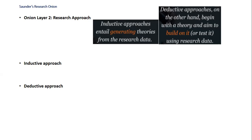Qualitative research is often used as a basis to formulate theories and identify patterns — it is great for exploratory research where the objective is to explore what people think or feel, as opposed to confirmatory research where the objective is to test a hypothesis. Qualitative research is used to understand human perception, worldview, and the way we describe our experience. It is about exploring and understanding broad questions and perceptions.